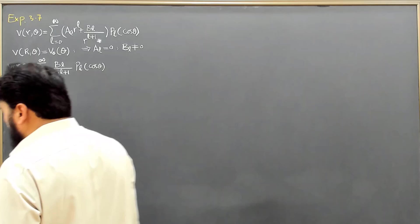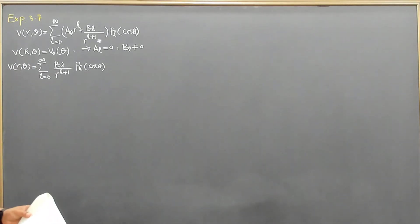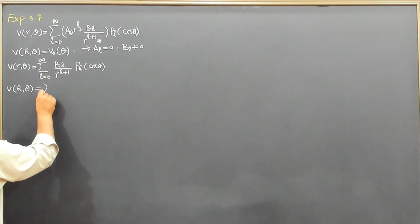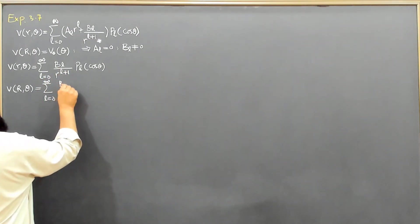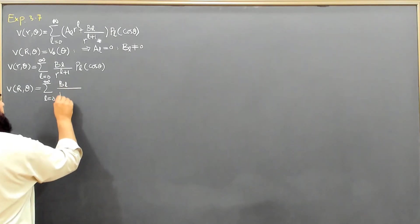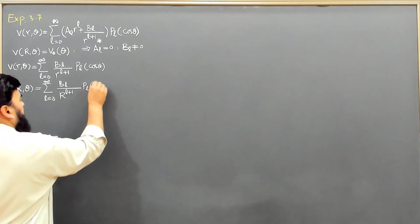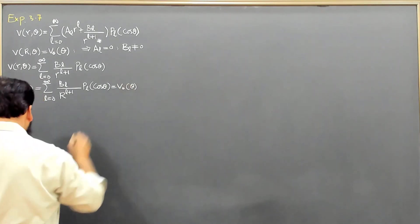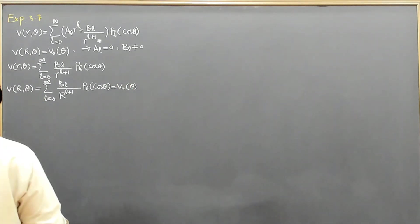Now we will do the same practice as we have done earlier. V(R,θ) will become summation on L: BL·R^(L+1)·PL(cos θ) equals V₀(θ). So we have reached this point.